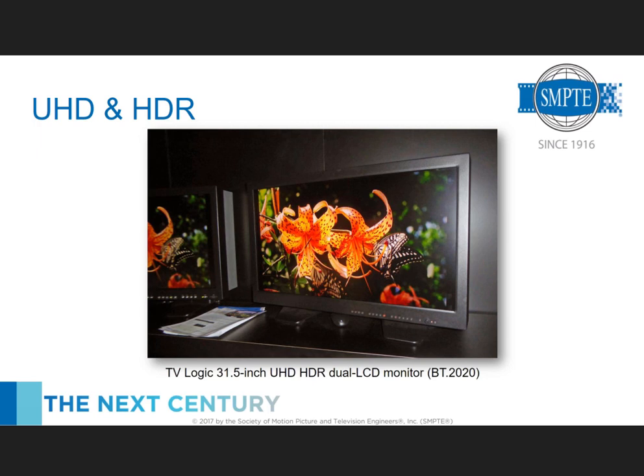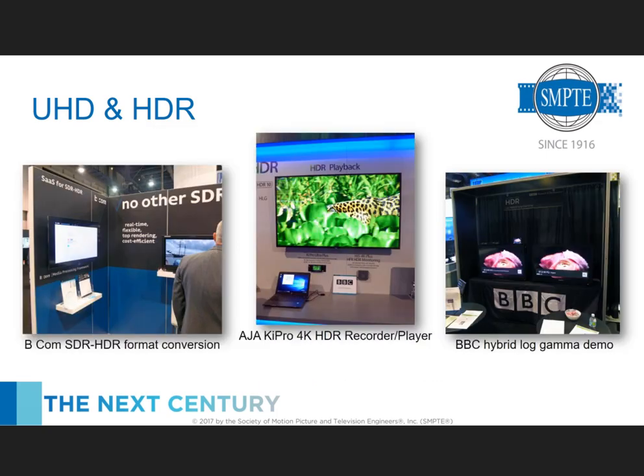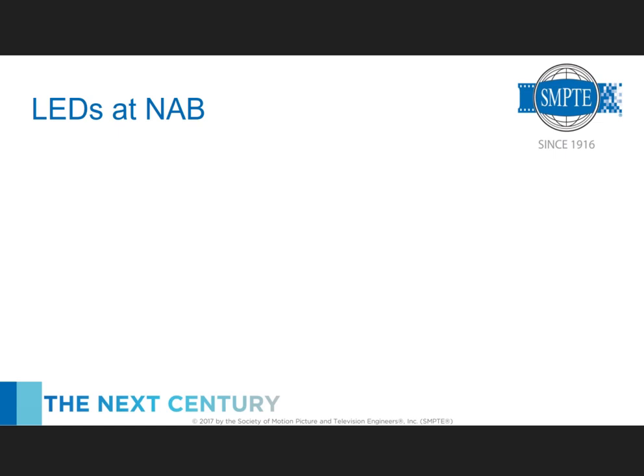BCom was talking about SDR to HDR format conversion. Technicolor does the same thing, and a handful of other companies offered jumping back and forth between SDR and HDR for bandwidth efficiency and reduced transport rates. The AJA Ki Pro 4K HDR recorder/player had a nice demo. Over at the BBC exhibit, they showed Hybrid Log Gamma compared to PQ, which was very helpful since many people don't fully understand how Hybrid Log Gamma works — explaining that it's essentially just a gamma curve, not really metadata.